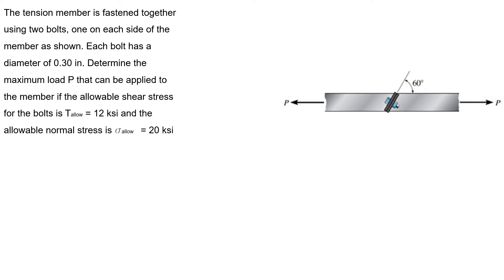Hello, this is the last problem of homework 6. The tension member is fastened together using two bolts, one on each side of the member as shown.